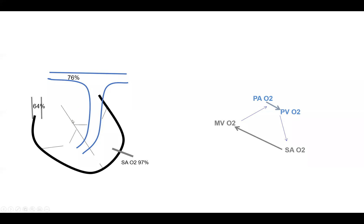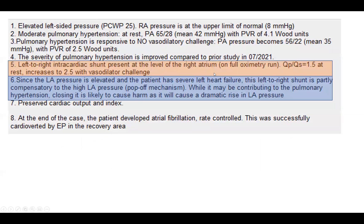The left-to-right shunt across what is likely a PFO or small ASD is serving as a pop-off mechanism for the left atrium — you cannot close it, as it will cause massive pulmonary edema. The same principle applies with right-to-left shunts serving as a pop-off for right heart failure, as in Eisenmenger syndrome. If the patient's left atrial pressure were normal and QPQS were 1.5, then yes, you would close it. But here it is absolutely serving as a pop-off. Do not close it, as it will aggravate her situation.